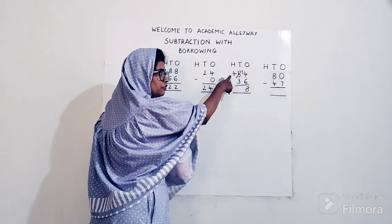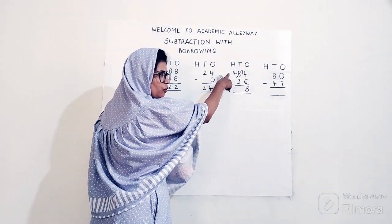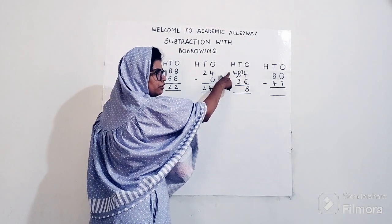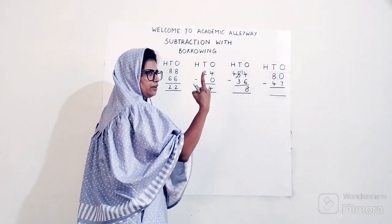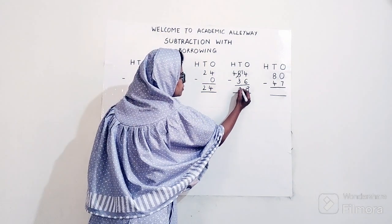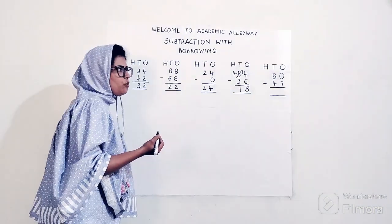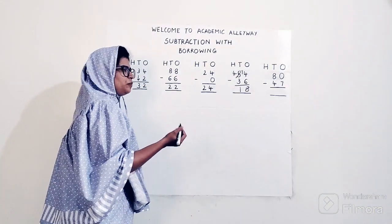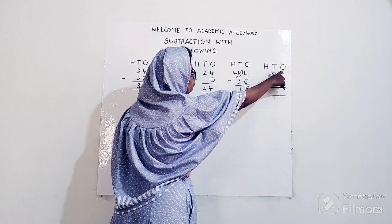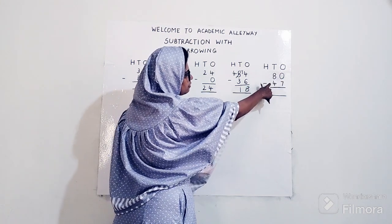Now moving to the tens place. My number is no longer 5 — my new number is 4. So I have to subtract 4 minus 3. Count after 3 till 4: that's 1 number. Answer is 1. So the final answer for 54 minus 36 is 18. This is the concept of borrowing.